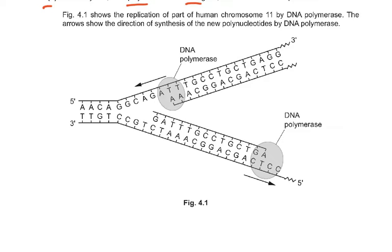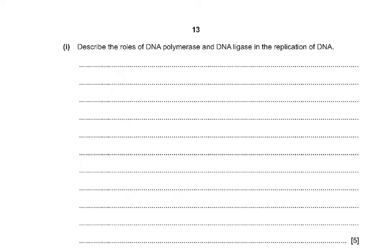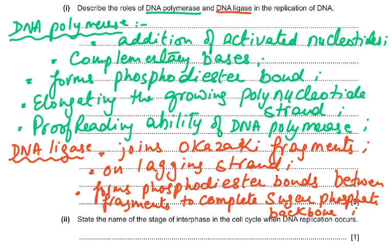If you need to revise DNA replication, this is from the 2022 syllabus. The question asks: describe the roles of DNA polymerase and DNA ligase in the replication of DNA. DNA polymerase carries out addition of activated nucleotides via complementary base pairing, forming phosphodiester bonds between adjacent nucleotides, elongating the polynucleotide strand, and proofreading. DNA ligase joins the Okazaki fragments on the lagging strand and forms the phosphodiester bonds between fragments to complete the phosphate-sugar backbone.